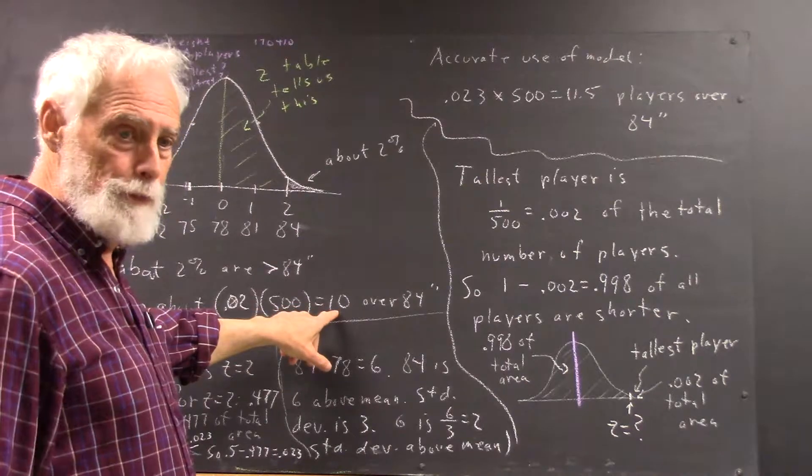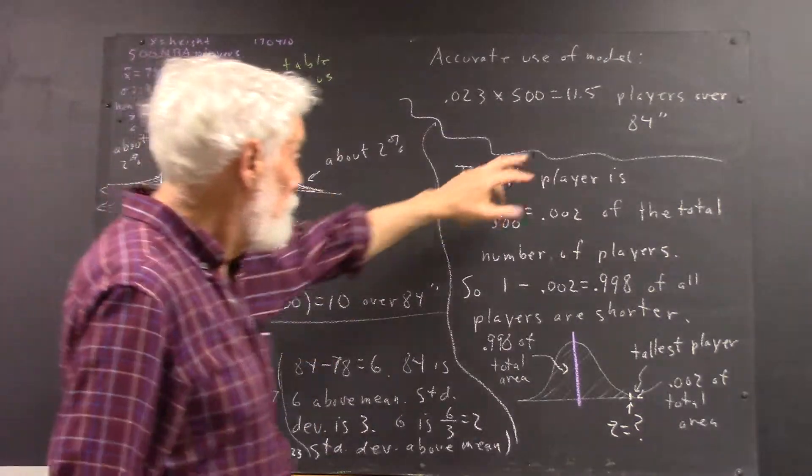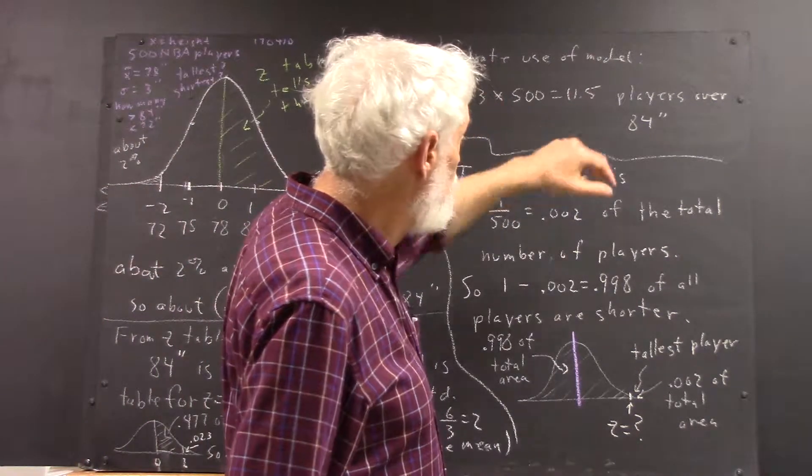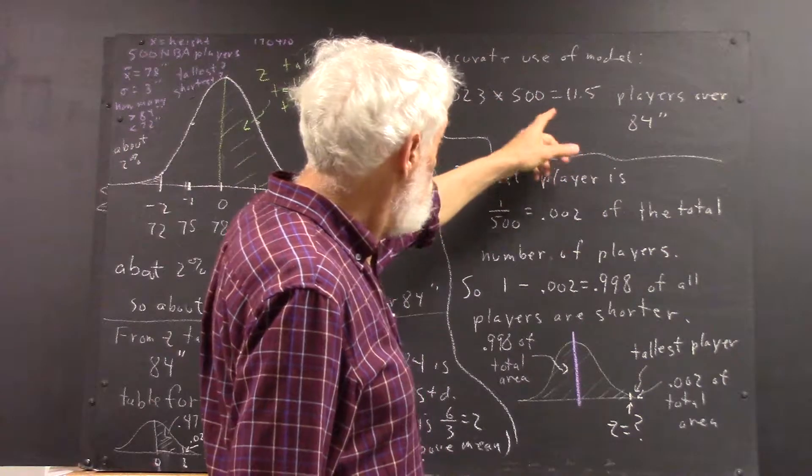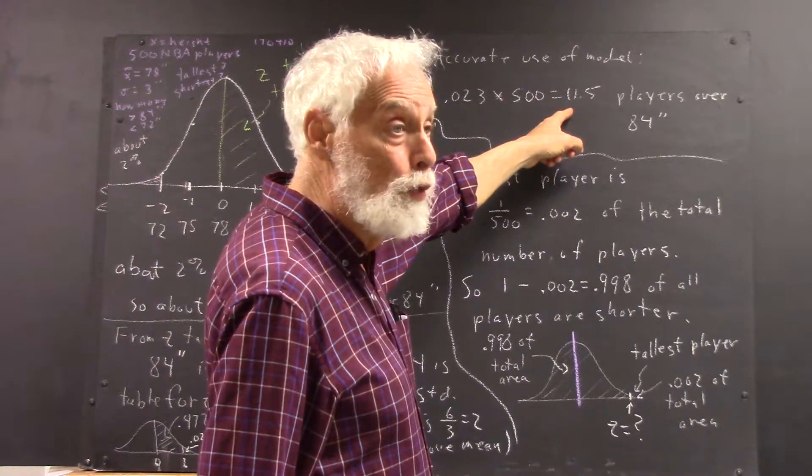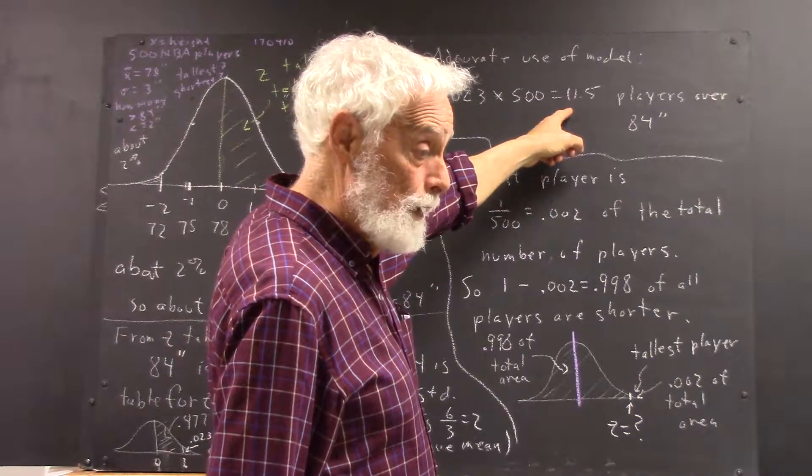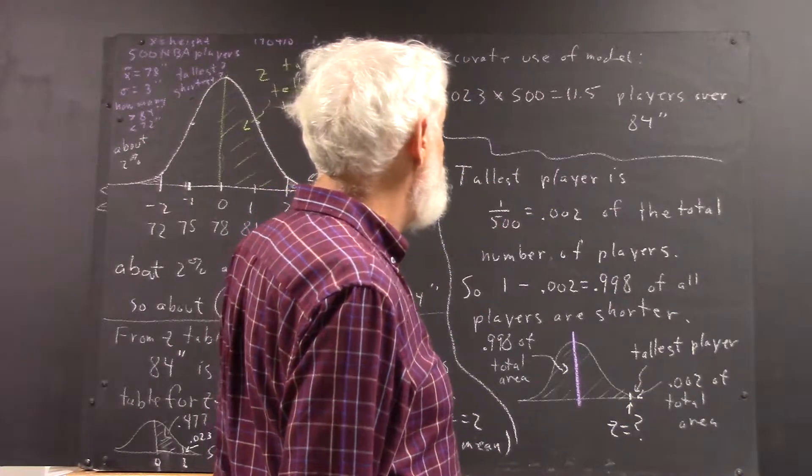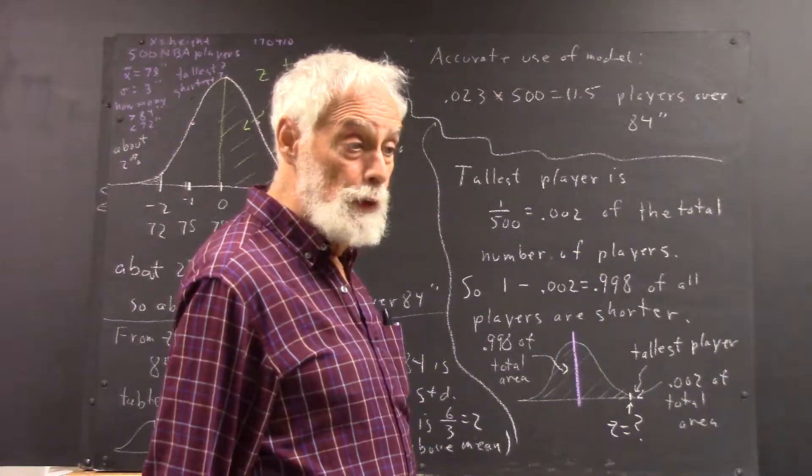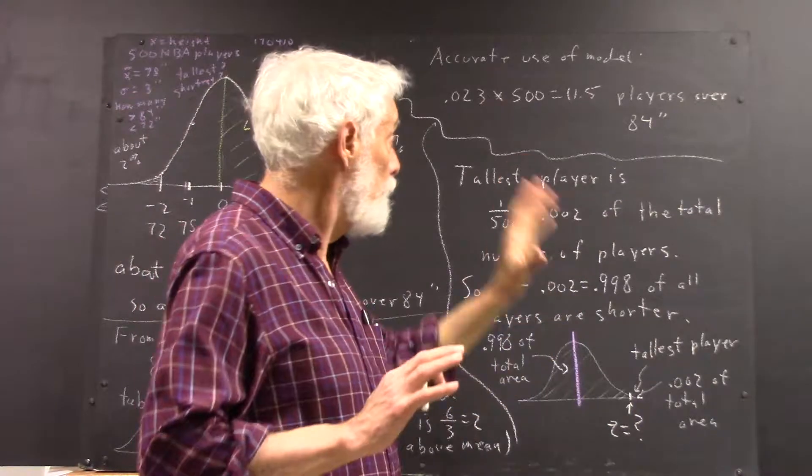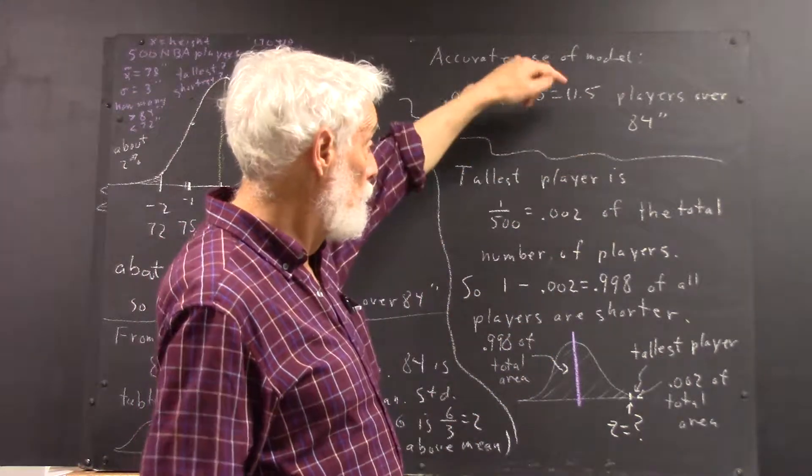That compares pretty favorably with the 10, but this is going to be a little more accurate. You can't have half a player, so you're going to round this off to the nearest whole number of players, and you're going to get 12. Another way of interpreting that, and if you understand this fine, if not don't worry about it,